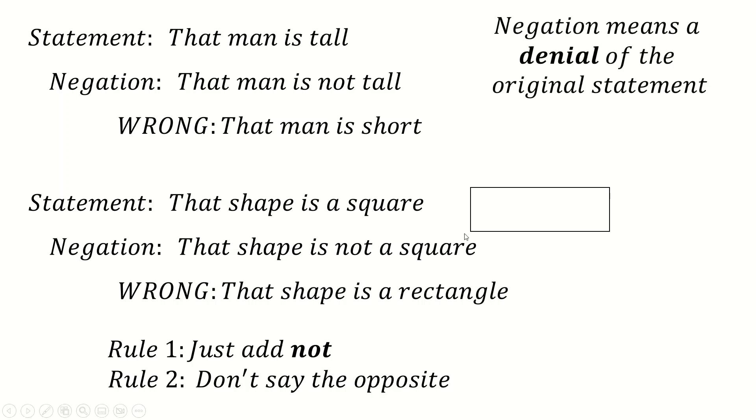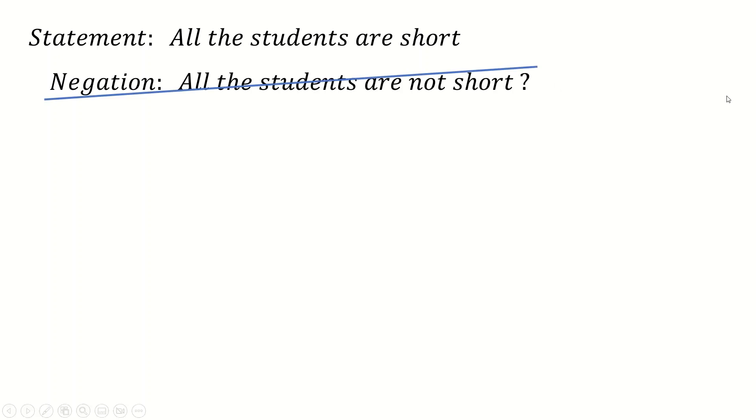And of course, what Tamura does is it makes it a bit harder by adding in before the actual statement here. It adds in an amount that it's talking about. So here, all the students are short, for example. What's the negation of that? Well, the negation is not all the students are not short. That's not the correct negation. And the reason it's not correct is because you don't need all the students to be not short for this to be incorrect. All you need, really, is for one student to not be short. And then this statement is incorrect.